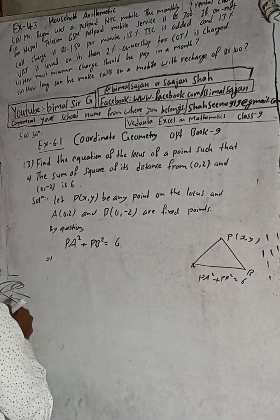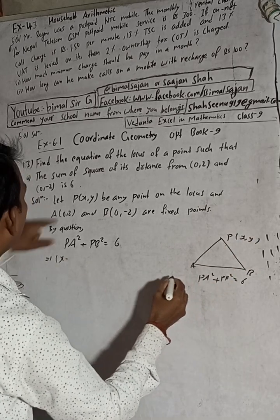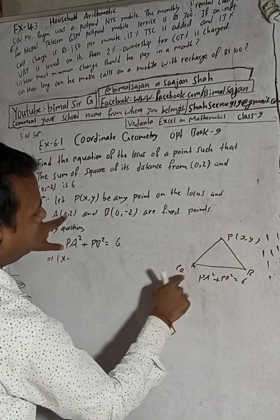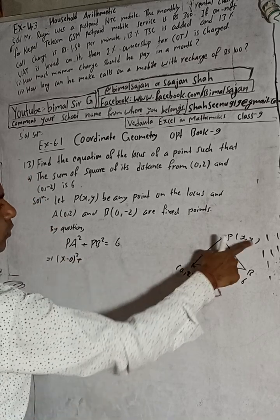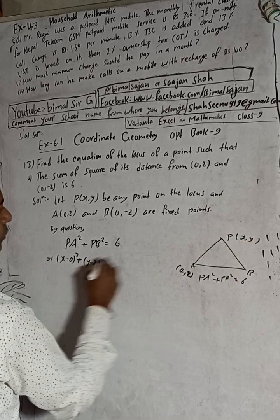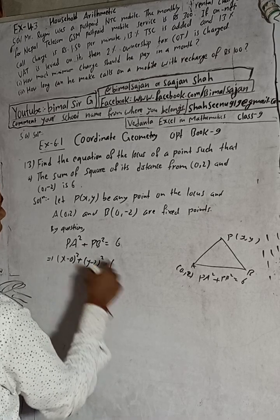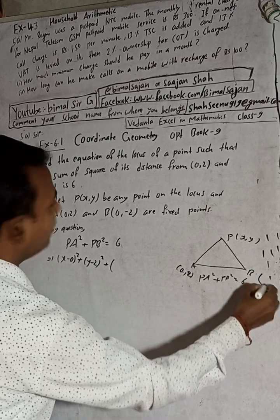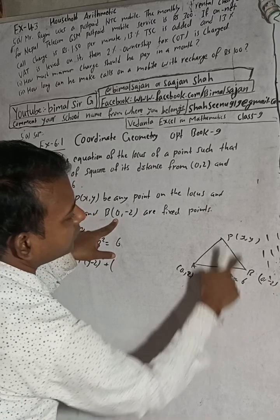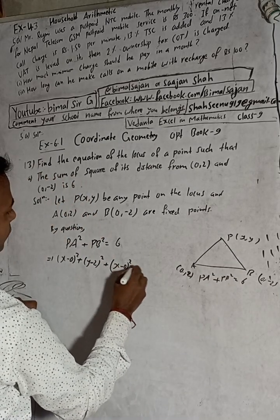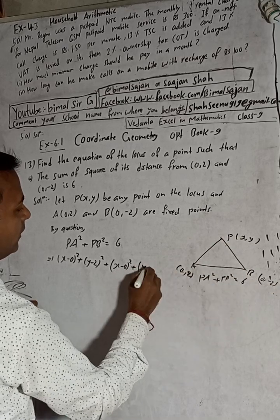Now to find the distance, we use the distance formula. PA means distance from P(x, y) to A(0, 2), so PA² = (x - 0)² + (y - 2)². And PB means distance from P(x, y) to B(0, -2), so PB² = (x - 0)² + (y - (-2))².